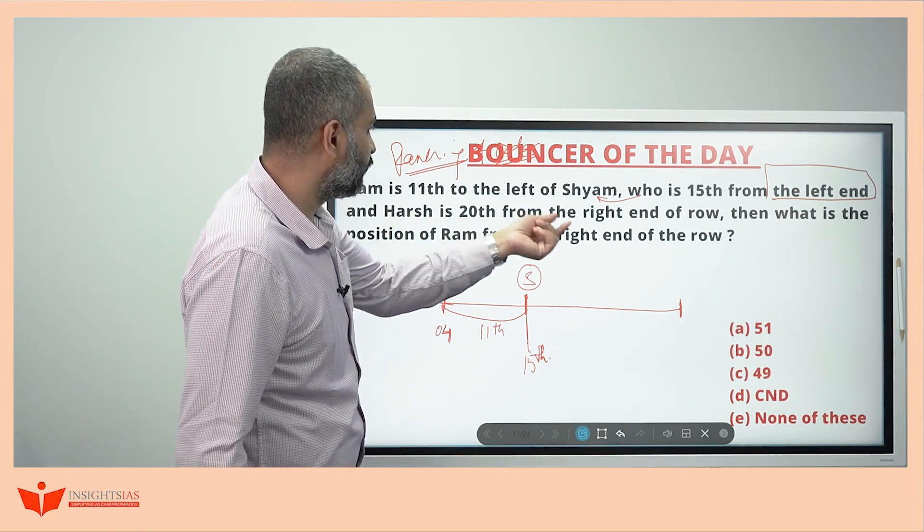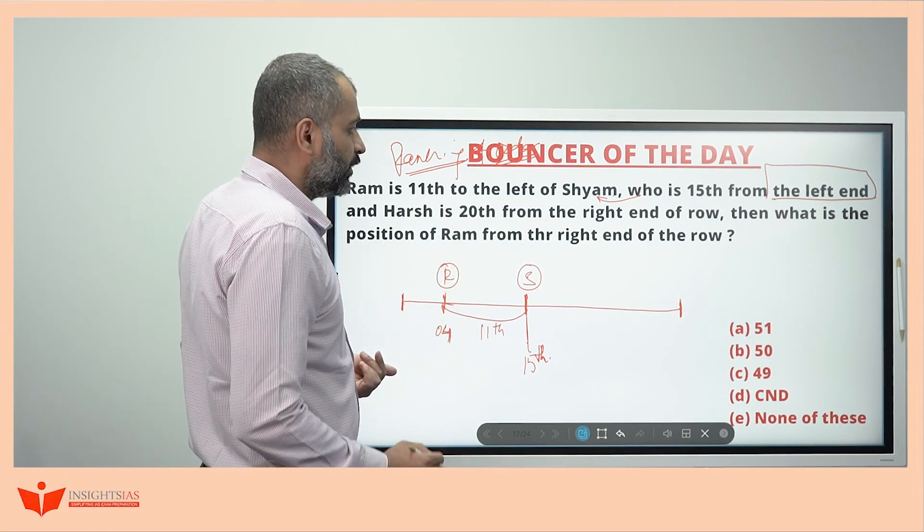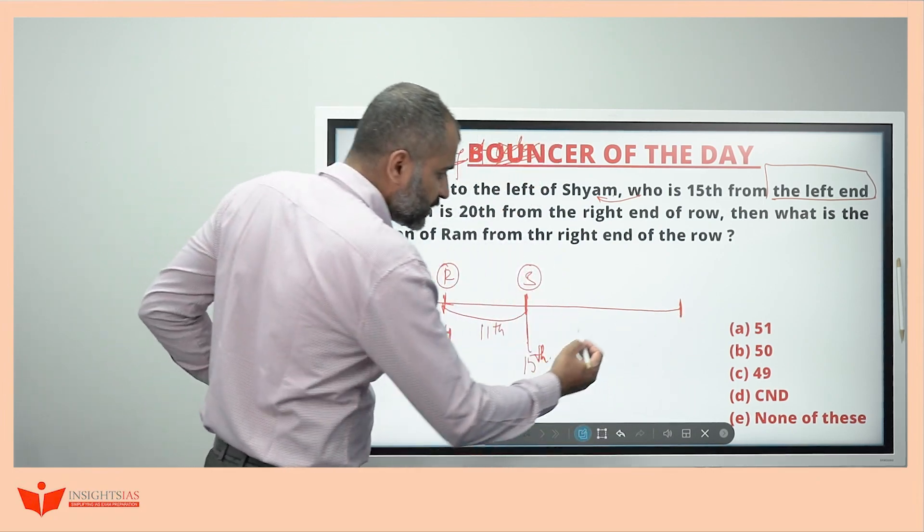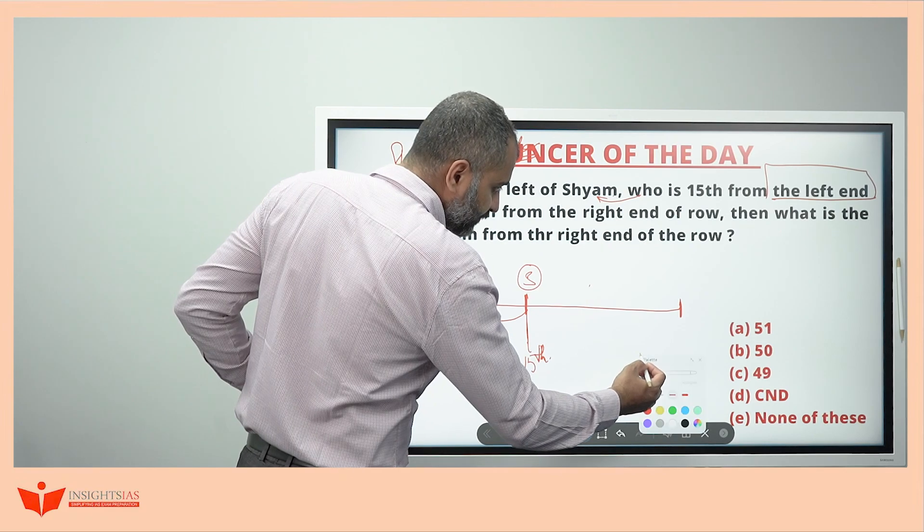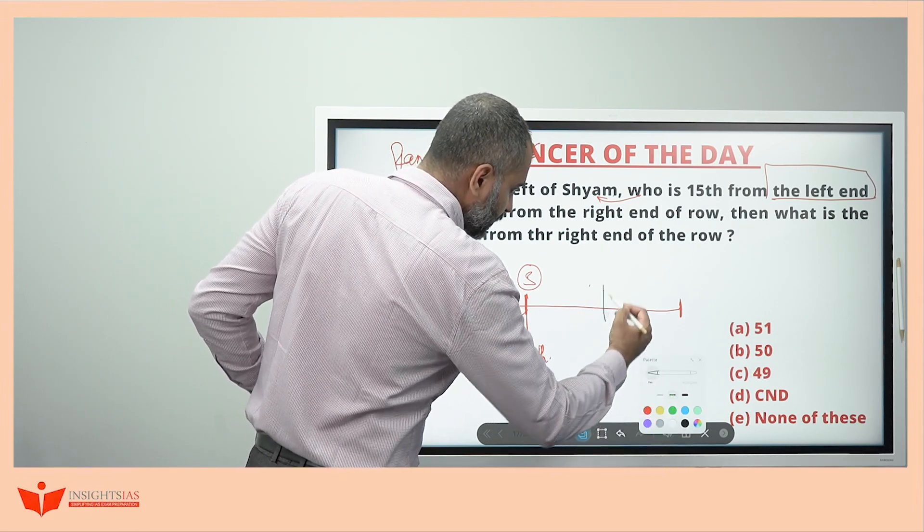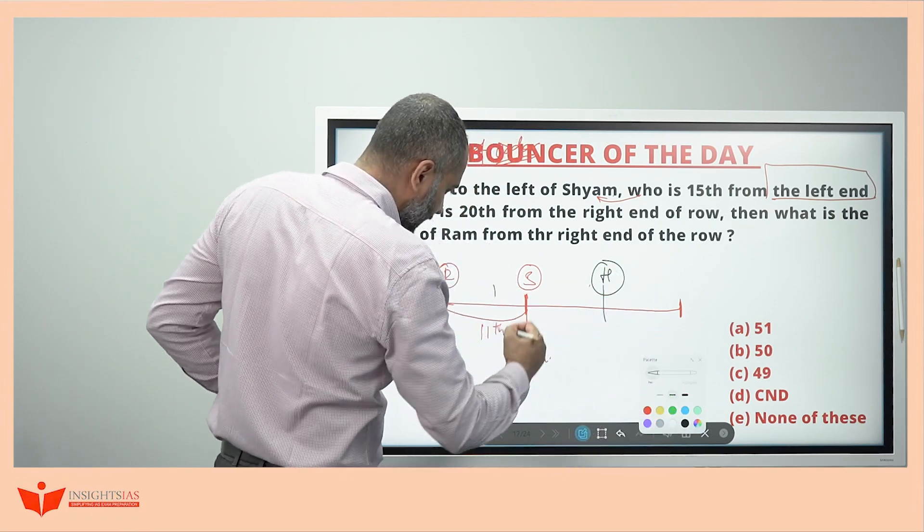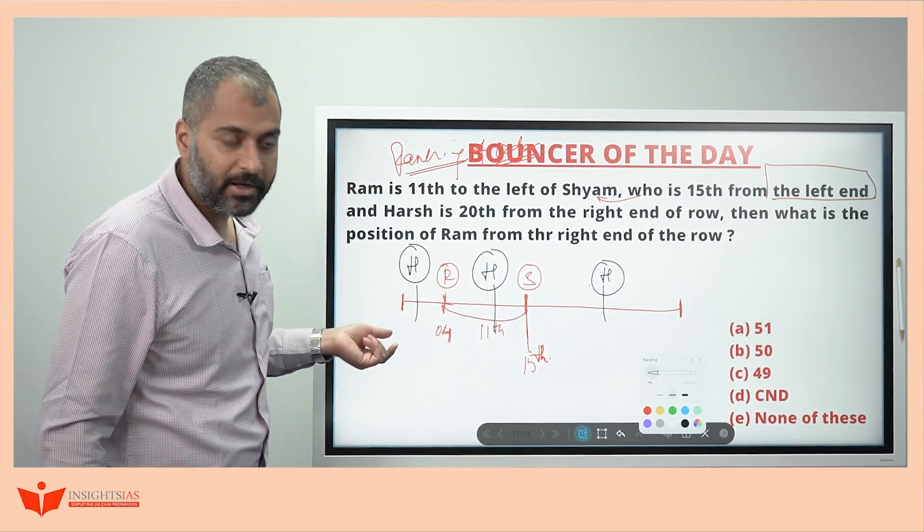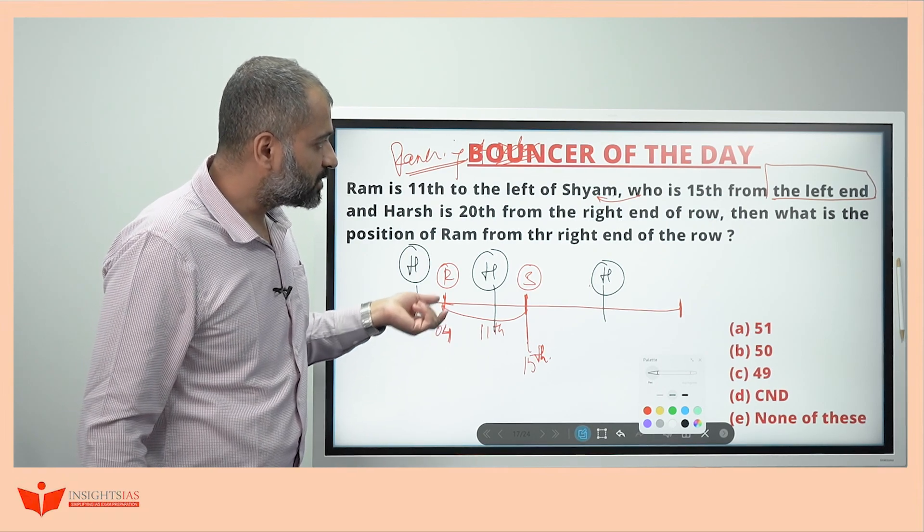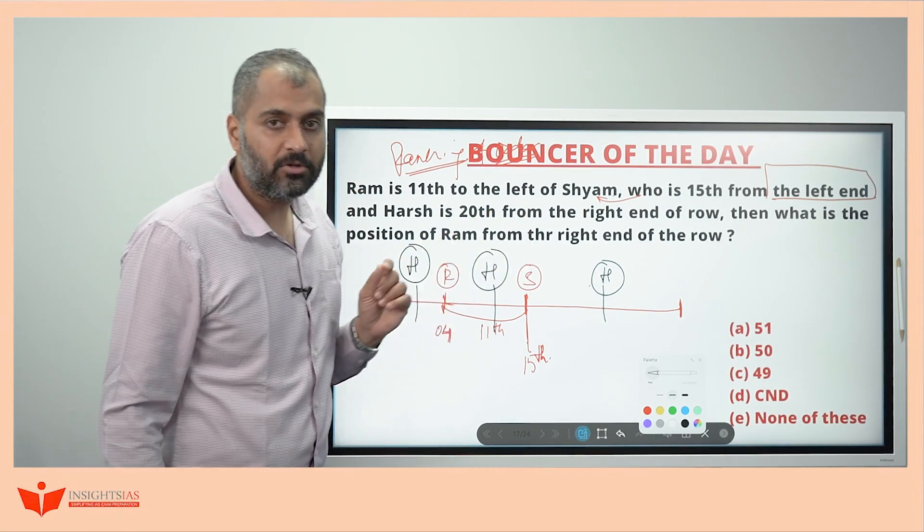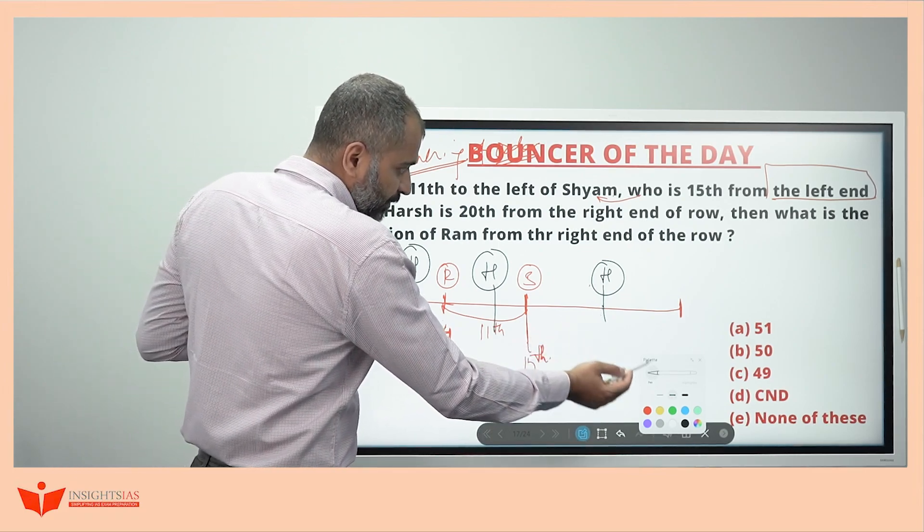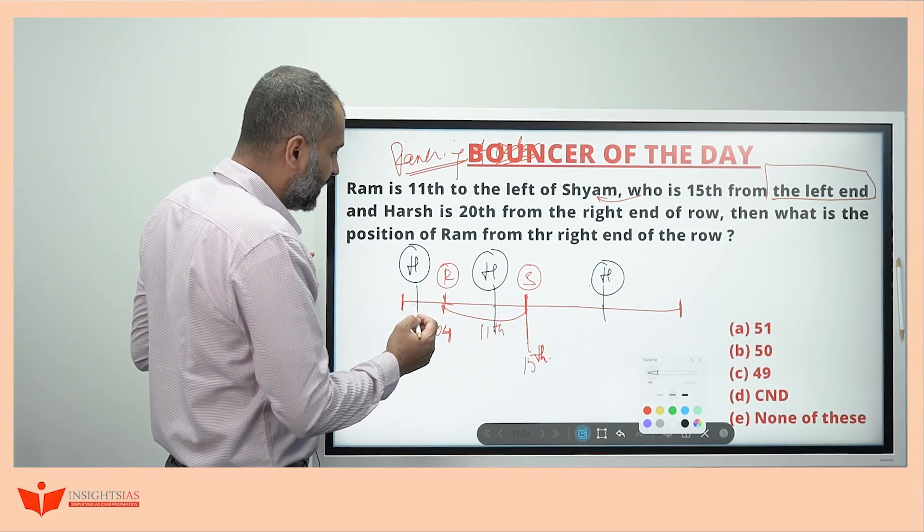Then, Harish is 20th from the right end of the row. Harish is 20th from the right end of the row means Harish can be somewhere here. There are a lot of possibility here for Harish, because the number of people in the row is not mentioned in this case. Hence, Harish can be either - he can be here, he can be here, he can be here.